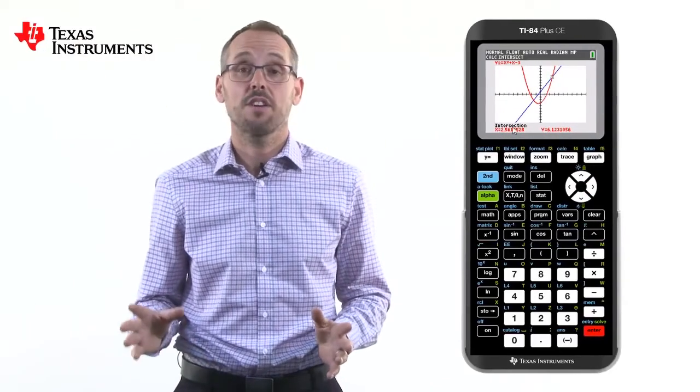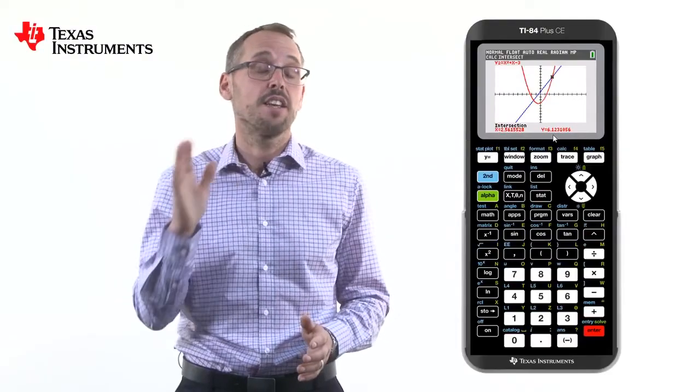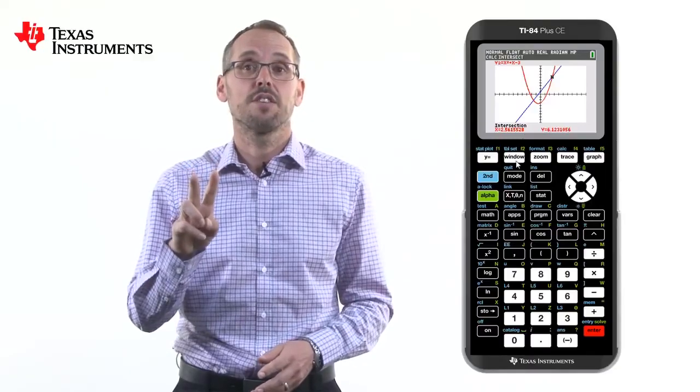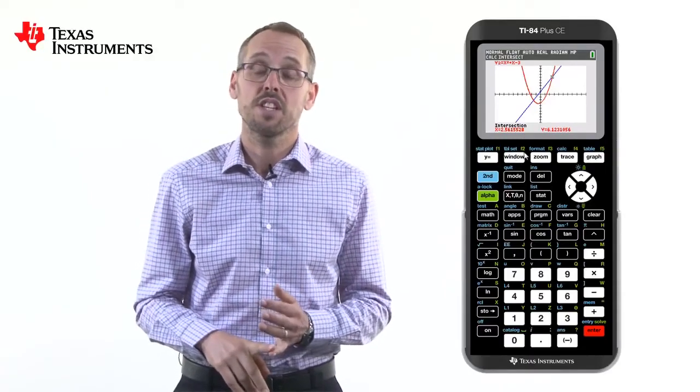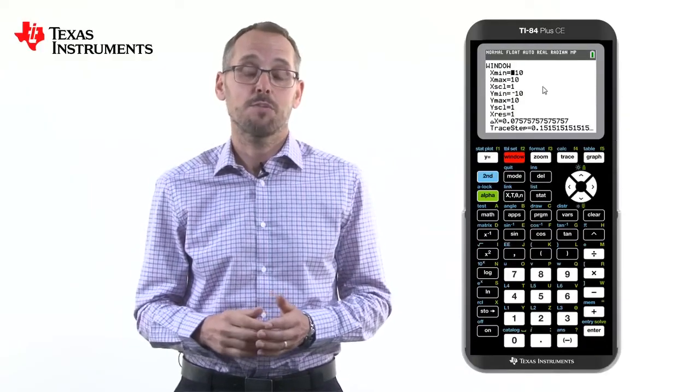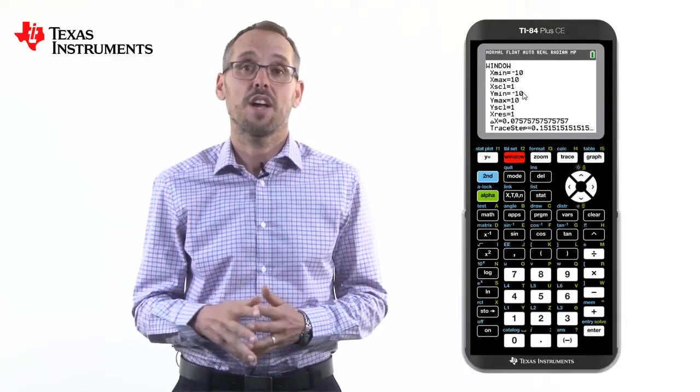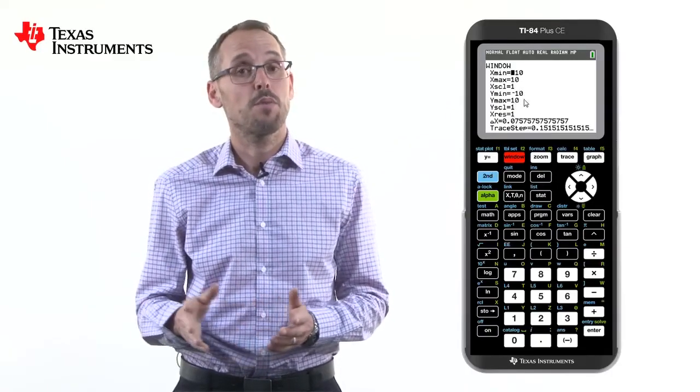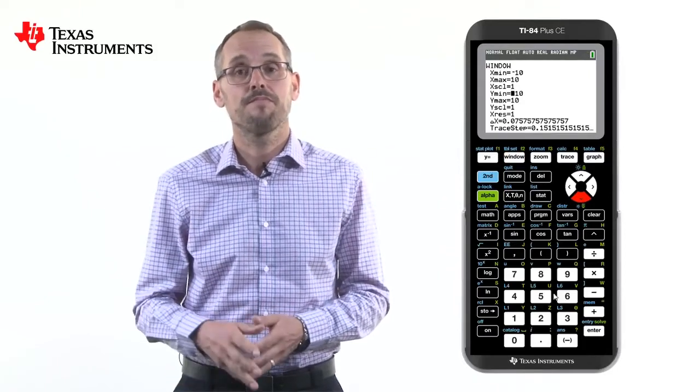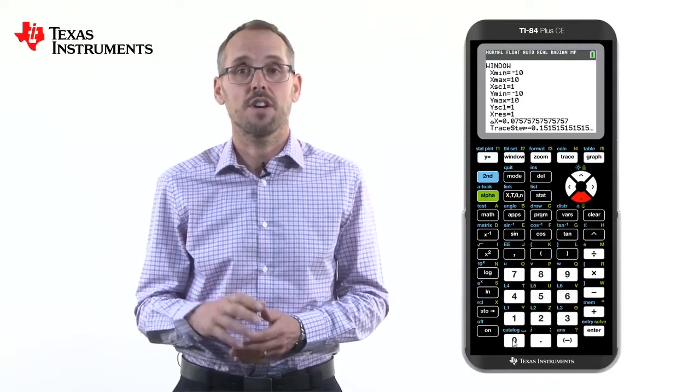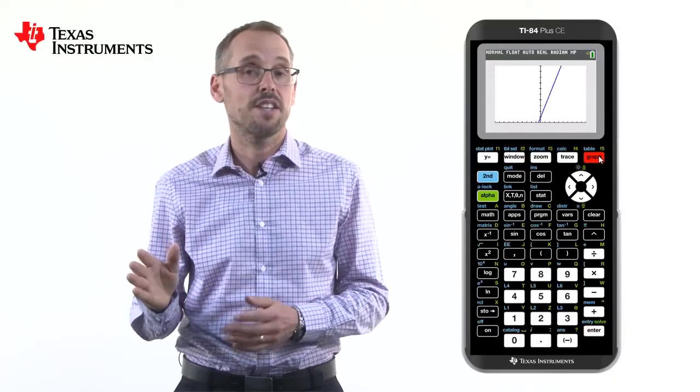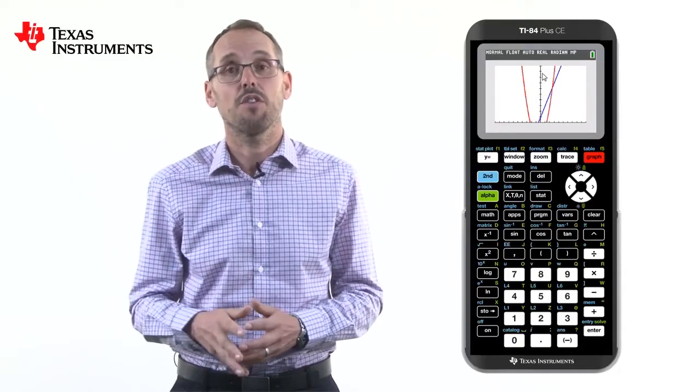Up until now, we've seen the graphs on an axis of minus 10 to 10 in both directions. If we want to adjust this, we can do this in two ways. Firstly, by going into window, which is located on the top row of buttons, and that allows us to change both the minimum and maximum of both the x and y axes. For example, if we only wanted to show the first two quadrants, we would change the y minimum to 0. And then when we press graph, it only shows the axes from minus 10 to 10 on the x axis, and 0 to 10 on the y.